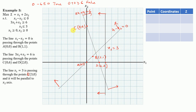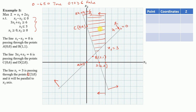The common feasible region satisfies all inequalities simultaneously. The feasible region lies above the line 3x1 + x2 = 6 and to the left of x1 = 3. This region extends toward infinity because no upper boundary is given for x2. This is an unbounded feasible region.